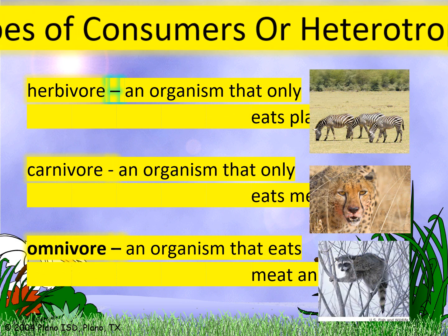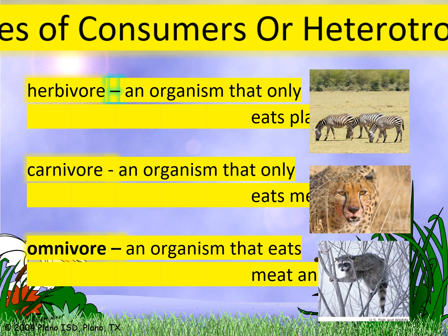There are types of consumers, or heterotrophs: the herbivore, the carnivore, and the omnivore. Herbivores eat plants only; carnivores eat meat only; omnivores eat both plants and meat. There are also insectivores, which are organisms that eat only insects.